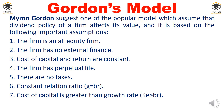Gordon had the following assumptions. First, the firm is an all-equity firm — there is no other source of finance, only equity. Second, the firm has no external finance; instead, retained earnings will be used as capital. Third, cost of capital and rate of return are constant. Fourth, the firm has perpetual life — the firm will not be closed down in the future; it will continue into the foreseeable future.